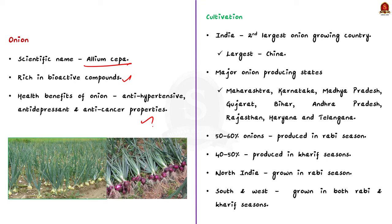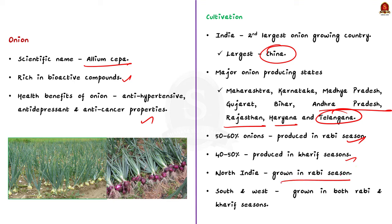India is the second largest onion growing country in the world, after China. In India, onion is grown in Maharashtra, Karnataka, Madhya Pradesh, Gujarat, Bihar, Andhra Pradesh, Rajasthan, Haryana, and Telangana. Around 50 to 60% of India's onion crops are grown in the Rabi season, with the remaining 40 to 50% produced in the Kharif and late Kharif seasons. In northern India, onions are usually grown in the Rabi season, while in southern and western states like Karnataka, Andhra Pradesh, Tamil Nadu, Maharashtra, and Gujarat, they are grown in both the Rabi and Kharif seasons.